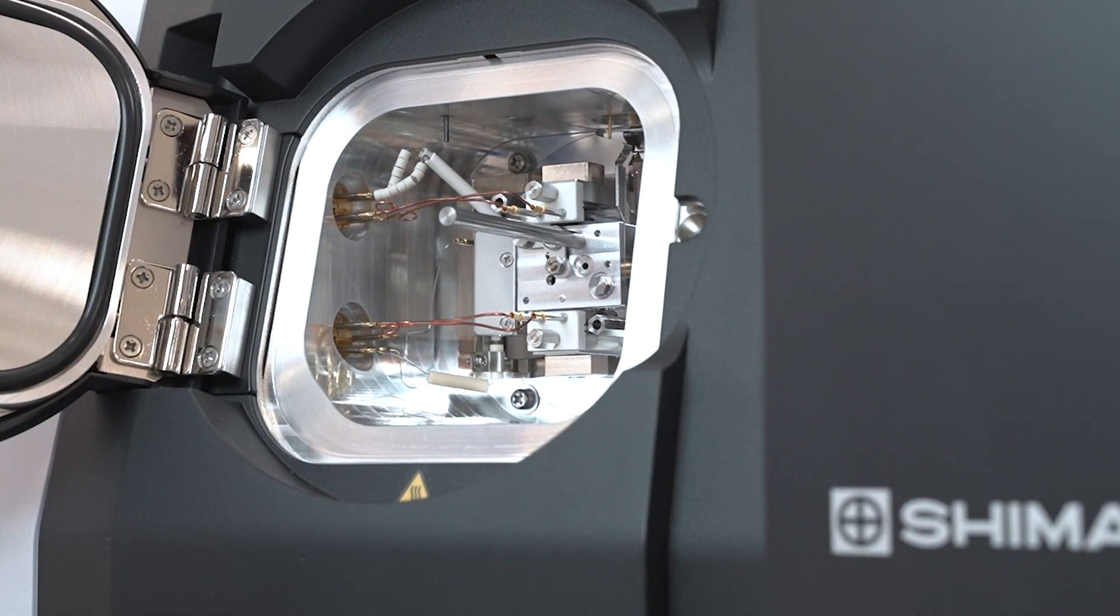First, securely screw the jig into the port at the upper right of the ion source. You will notice that no wires need to be disconnected or rearranged.